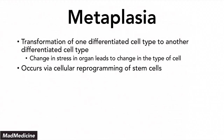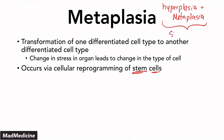Metaplasia is the transformation of one differentiated cell type to another differentiated cell type. This is a type of cellular reprogramming at the stem cell level. Hyperplasia and metaplasia are similar in that both function at the stem cell level. In hyperplasia, you increase the turnover of stem cells to produce more functional cells. In metaplasia, the stem cells are being reprogrammed to create a different type of cell.